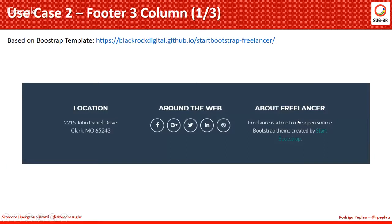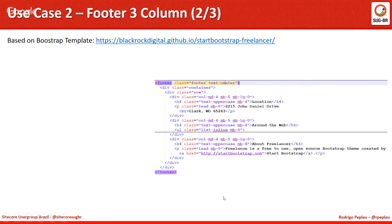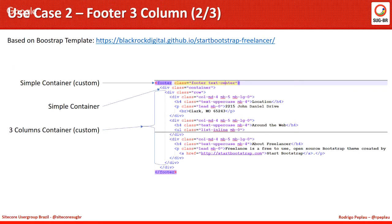I forgot to mention that the two use cases are based on a Bootstrap template. This one has three columns with three rich text editors inside. The markup is even simpler — it has a simple container outside with some classes, a simple container inside native, and a three-columns container with a rich text inside each of the three placeholders.